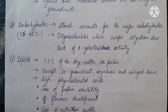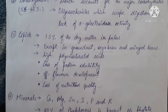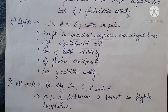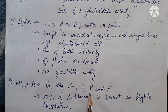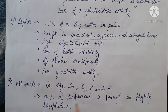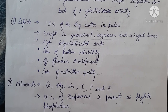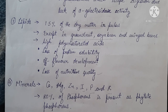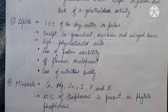Next, minerals: pulses are important sources of calcium, magnesium, zinc, iron, phosphorus, and potassium. A major portion — about 80% — of the phosphorus is present as phytate phosphorus. Phytin forms complexes with proteins and minerals and renders them biologically unavailable to humans and animals. Processing methods such as cooking, soaking, germination, fermentation, etc. can reduce or eliminate appreciable amounts of phytin, as it is also known as an anti-nutritional factor.